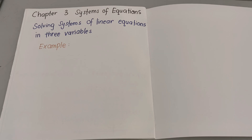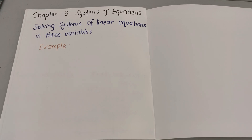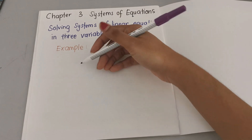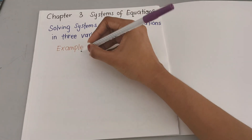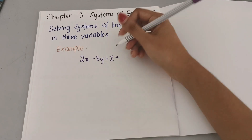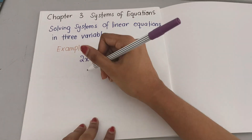The first part is solving systems of linear equations in three variables. Previously we solved simultaneous equations in two variables, like 2x plus 3y equals 6. This time we have three variables, so for example: 2x minus 3y plus z equals 20.